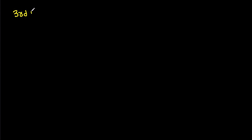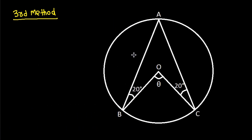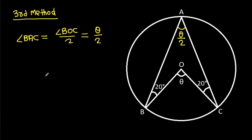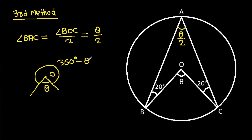The third method: we know angle BAC will be angle BOC over 2, that is theta over 2. So this angle is theta/2, and at center O this angle is theta. The reflex angle at O will be 360 degrees minus theta.